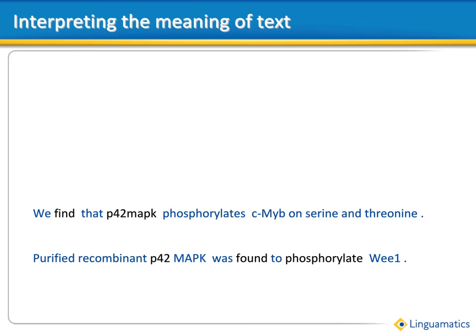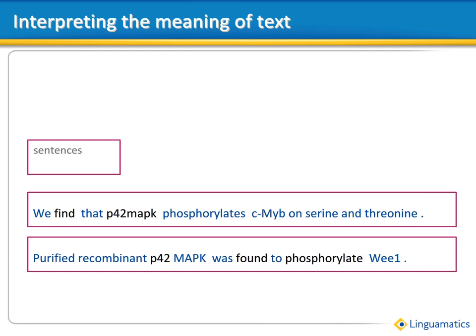To understand how text mining systems like I2E interpret the meaning of text, let's take the example of these two pieces of text below. First of all, the I2E software recognises that these two pieces of text are sentences. This alone can be very valuable, especially if you're looking for associations or connections between things. If you did a standard keyword search looking anywhere in a document, the chances of the two things being associated can be quite small — it introduces a lot of noise in the results. If they co-occur in the same sentence together, there's a much greater likelihood that there is an actual association between the two things.